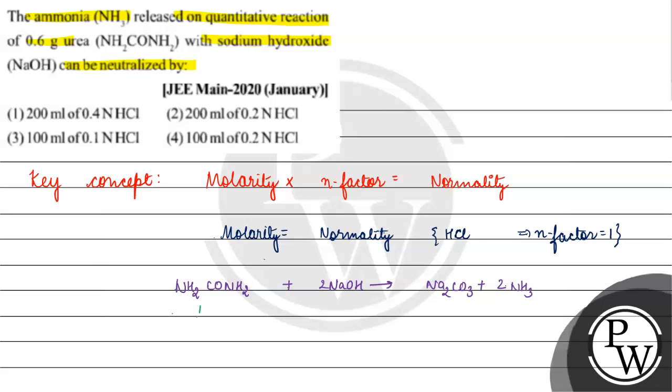For urea, the number of moles of urea will be mass of urea (0.6 gram) divided by molar mass of urea (60), which gives us 0.01 mol.